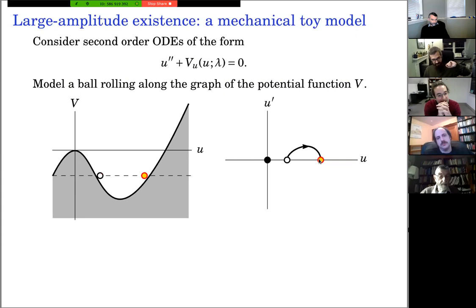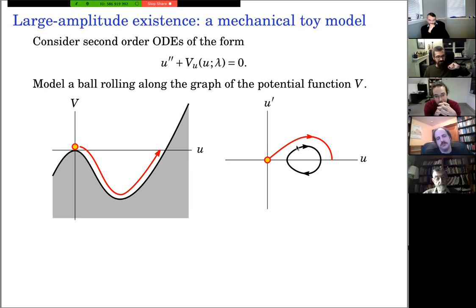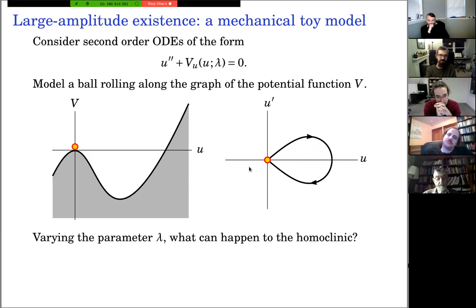To get intuition, consider the Hamiltonian ODE u'' + V'(u; lambda) = 0, modeling a ball rolling on a landscape given by the potential V. Starting a ball at a local maximum and giving it an infinitesimal kick, it rolls down and back up in infinite time — this is a homoclinic solution, analogous to a solitary wave. In global bifurcation, as we vary the parameter lambda, we ask what can happen to this homoclinic loop.